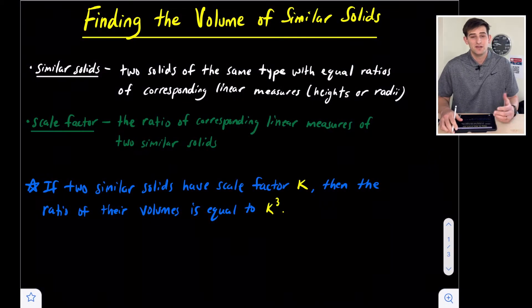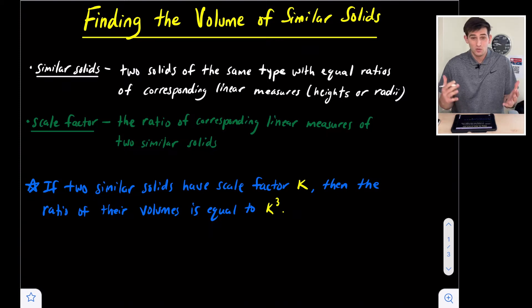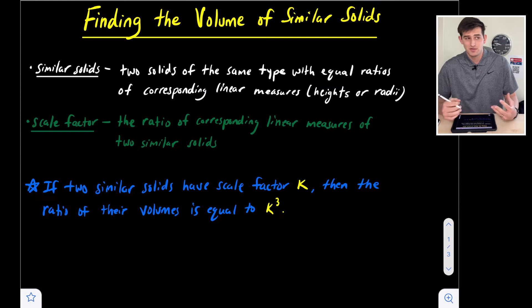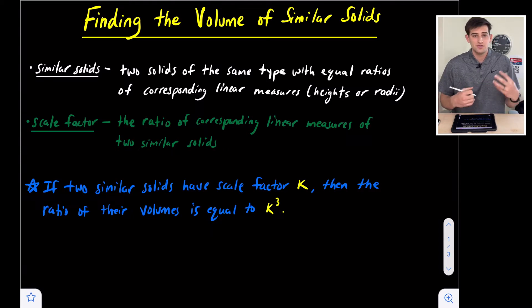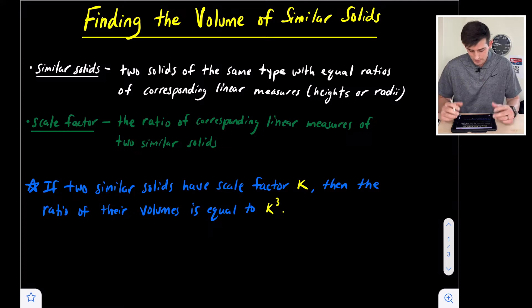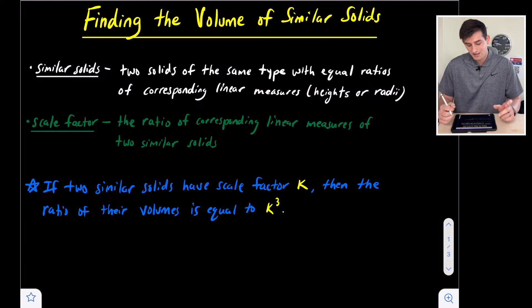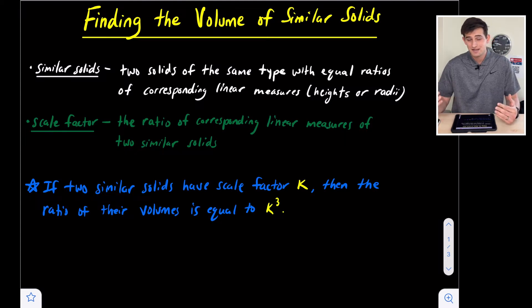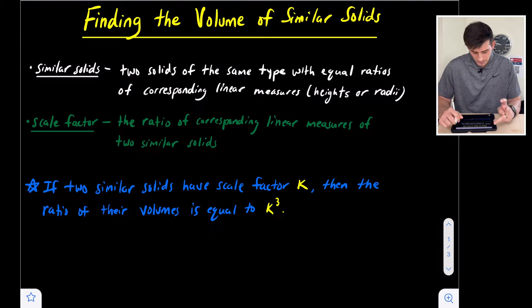In this video we're going to talk about how to find the volume of similar solids. So first of all, what is a similar solid? It's just two solids of the same type — so two rectangular prisms, two cylinders, two spheres — where the two shapes that are similar are the same type, and they also have equal ratios of corresponding linear measures, such as the height or the radii of the two shapes.